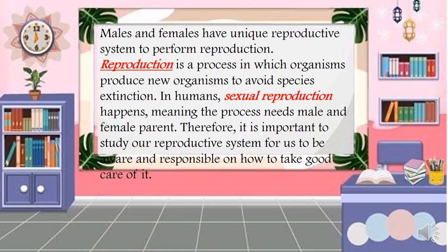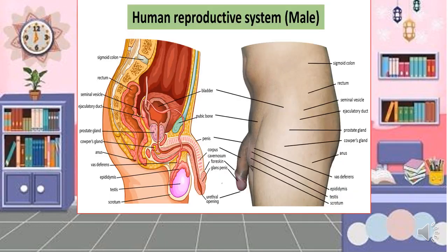Here is the picture of the human reproductive system of a male. You can see the different parts: the sigmoid colon, rectum, seminal vesicle, ejaculatory duct, prostate gland, Cowper's gland, anus, vas deferens, epididymis, testes, scrotum, bladder, pubic bone, penis, corpus cavernosum, foreskin, glans penis, and the urethral opening.